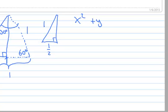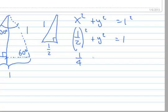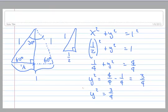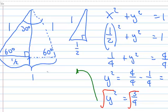Using x² + y² = 1²: (1/2)² + y² = 1, so 1/4 + y² = 1. Subtracting 1/4 from each side: y² = 3/4. Taking the square root: y = √3/2. So the leg of this triangle is √3/2.